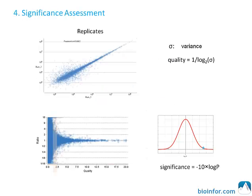Next, we make the significance assessment. Technical replicates are used to evaluate the variation of a feature between runs. A quality value is associated with a feature in terms of its intensity, isotope, and elution patterns.